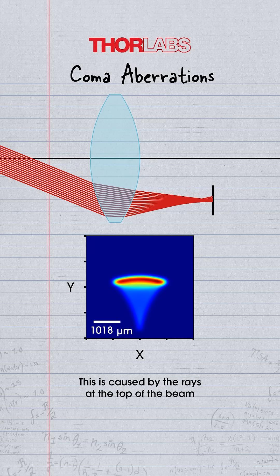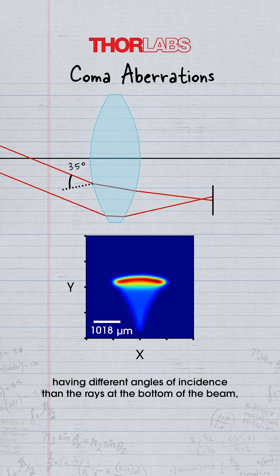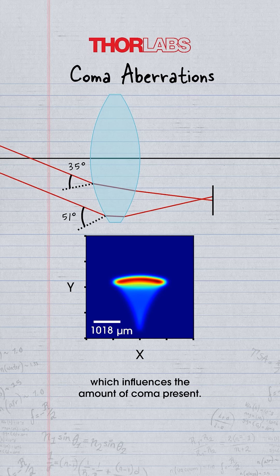This is caused by the rays at the top of the beam having different angles of incidence than the rays at the bottom of the beam, which influences the amount of coma present.